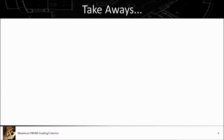The eccentricity alone, though quite apparent by eye when looking at images, can be a very misleading indicator of image quality. My typical RA pointing error performance is worse than my declination performance. But if I get better than average declination performance, that produces a more eccentric star — but in fact it's better image quality, at least in the declination direction. So I don't want to rely on eccentricity alone.